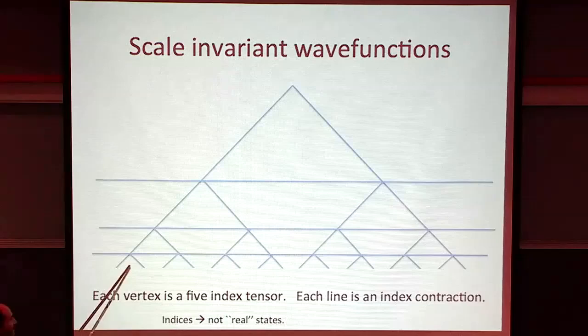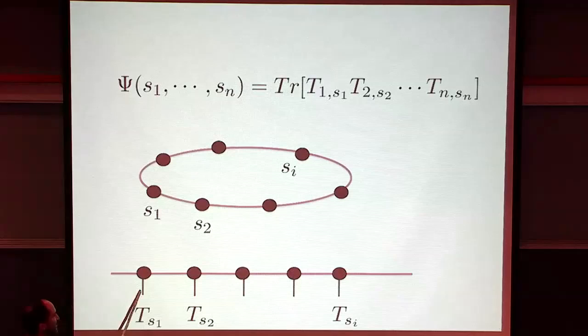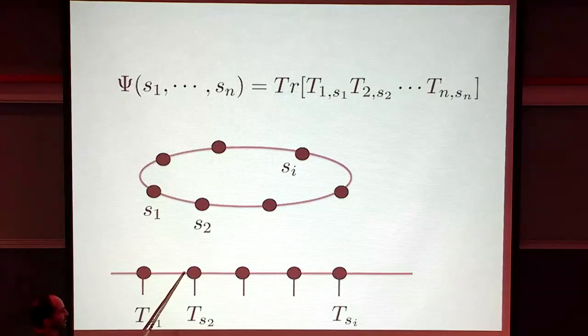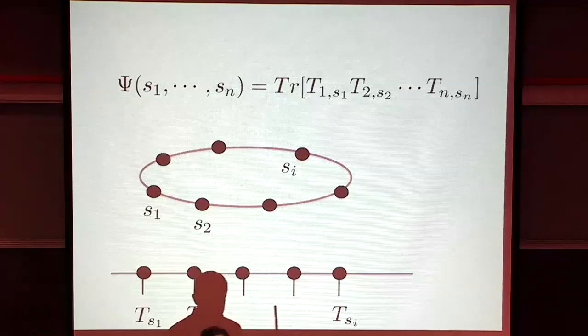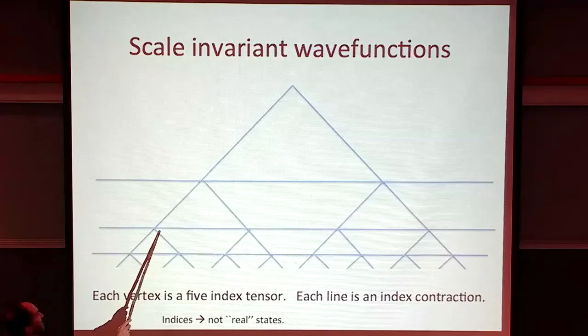Each tensor is an intersection between two lines - the line that comes in and the line that goes sideways. This line represents one index of the tensor, and the other is the second index. A closed line represents a contraction of the two indices. In the MERA ansatz, we have a five-index tensor at each bulk point, with some indices contracted with the ones higher in the hierarchy.